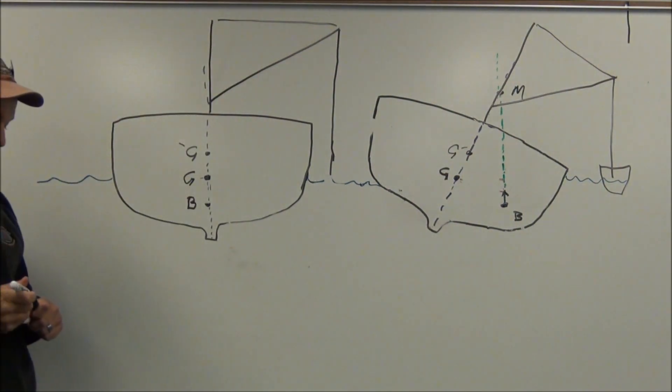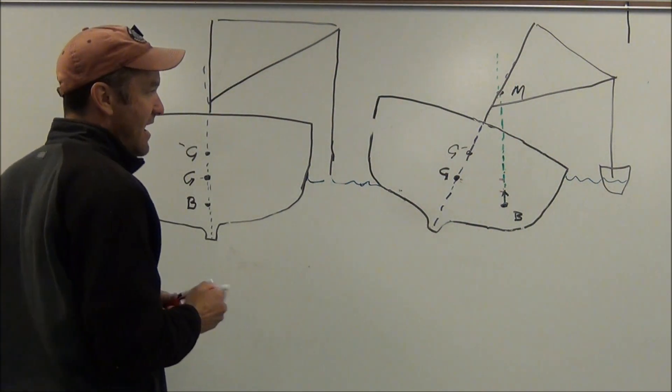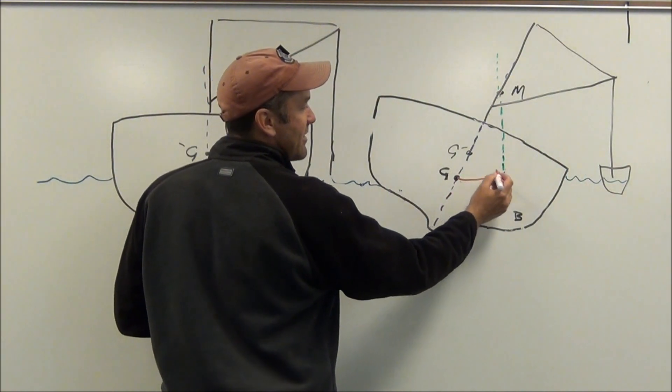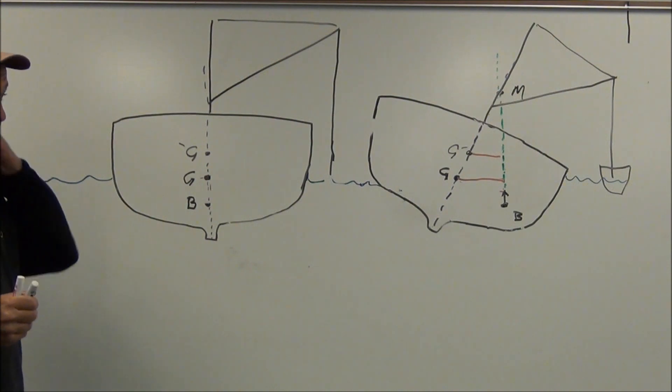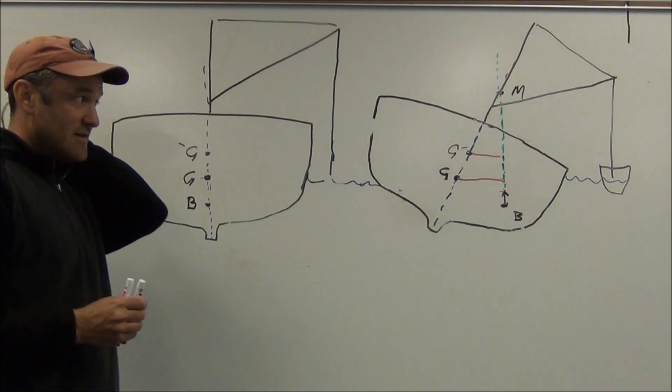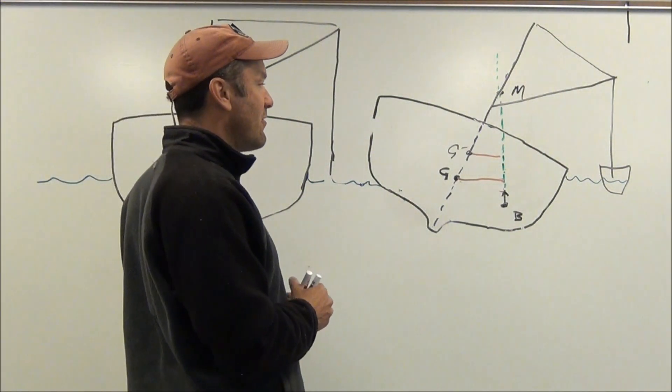So we've raised that up. Now you can see how here's our old righting arm. Our new righting arm has gotten shorter as well. So therefore, there's less leverage that buoyancy will have to put the bow upright.